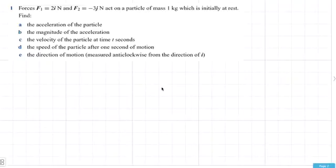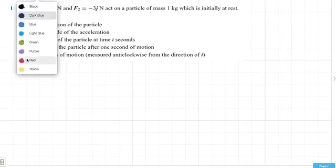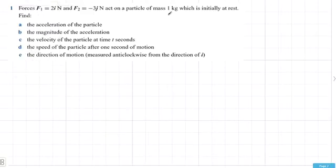We're in the exercises now for 13g, which is the last section. It's pretty much using vector calculus, which you've done before, and the classic formula F equals MA.